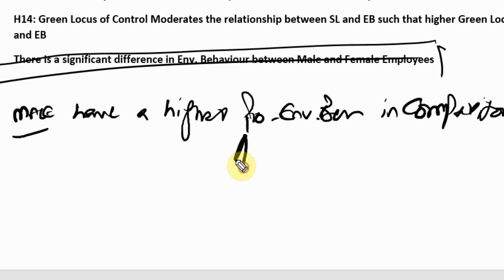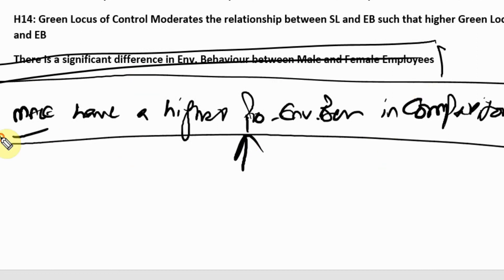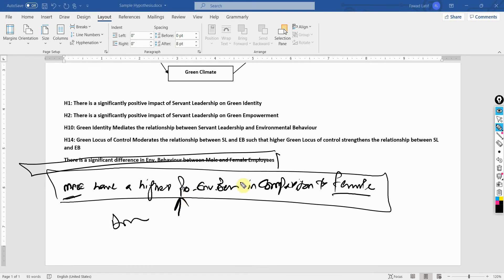If you want to turn this into a directional hypothesis, you would write: 'Males have a higher pro-environmental behavior in comparison to females.' Now there is a direction in the hypothesis. So if you have a differential hypothesis and want to make it directional, this is how you can do it. That covers directional, non-directional, relational, and differential hypothesis — thank you very much.